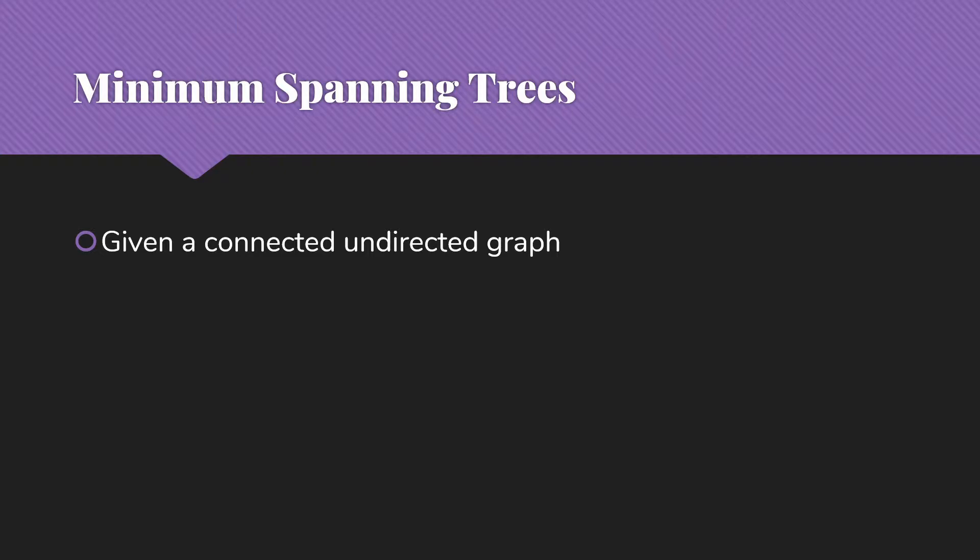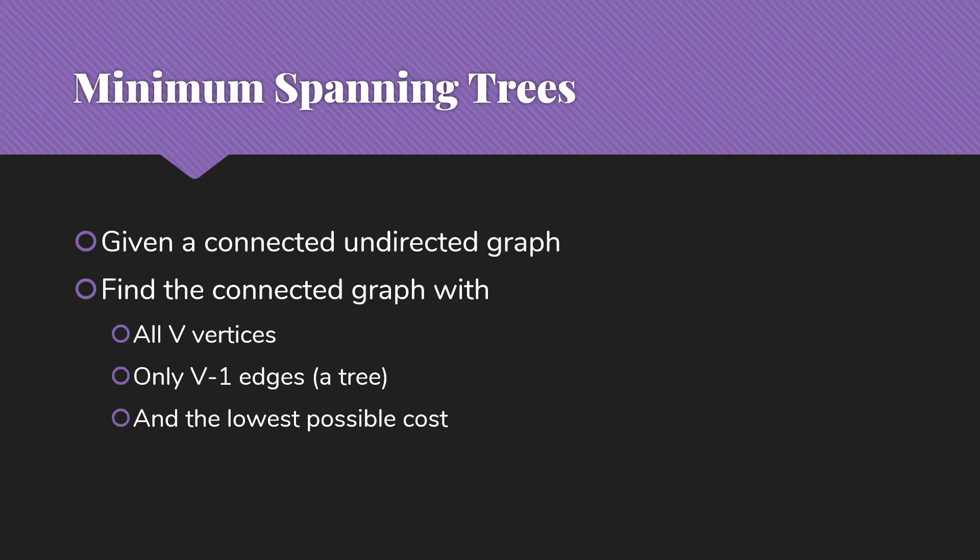Well, given a connected undirected graph, we are trying to find the connected graph that has all of the vertices, so all v of those vertices, but only v minus 1 edges, a tree. So in other words, this is the minimum number of edges we can have. That's a spanning tree. In addition, we want the lowest possible cost for those edges, which gives us the minimum spanning tree.